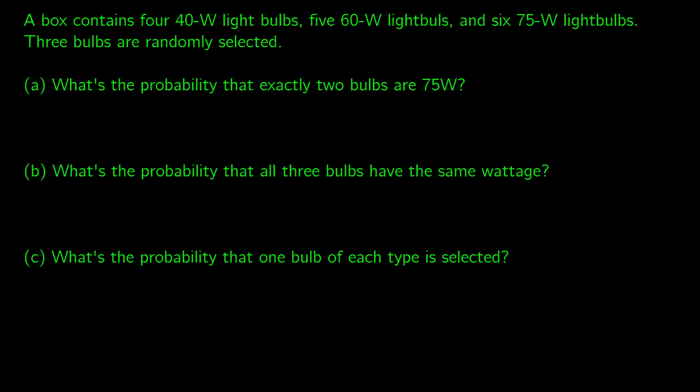Let's do a couple practice problems using probability with combinations. A box contains four 40-watt light bulbs, five 60-watt light bulbs, and six 75-watt light bulbs. We're going to select three at random. What's the probability that exactly two bulbs are 75 watts?